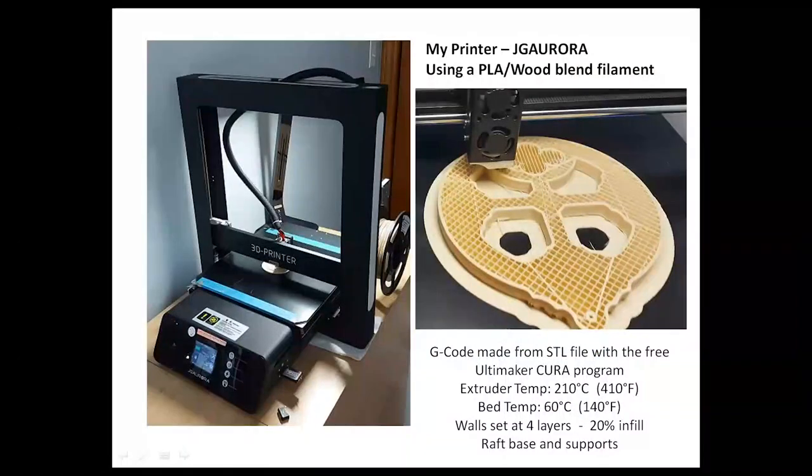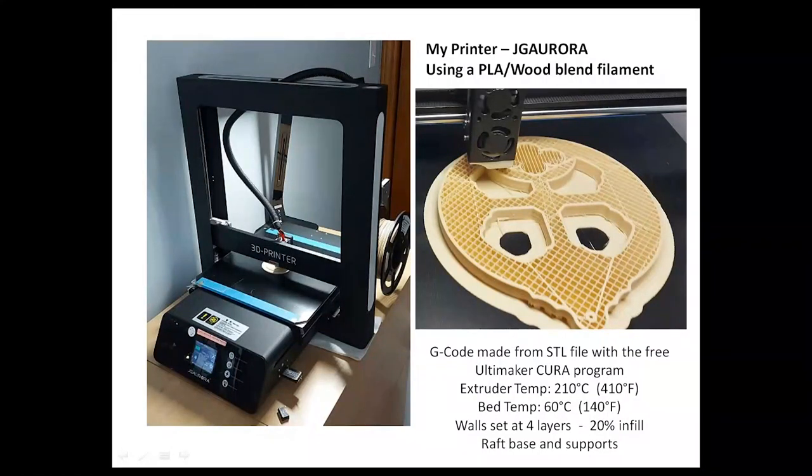This is my JG Aurora 3D printer. The right side image shows the body being printed. I created an STL file from my model, then generated the G-code or toolpath for the printer nozzle to follow using the free Ultimaker Cura program downloaded from the internet.